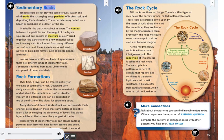Sedimentary rocks. Igneous rocks do not stay the same forever. Water and wind erode them, carrying away particles of broken rock and depositing them elsewhere. These particles may be left on a beach or riverbank, in a desert, or the sea.